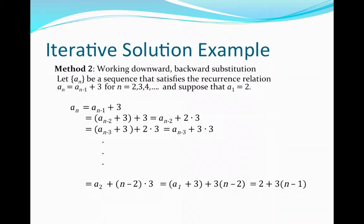Let's look at method number 2. Instead of working forward or upward, we're going to work downward using backward substitution. We're going to use the same recurrence relation and develop the same formula, but in a different way. Let a_n be a sequence that satisfies the following recurrence relation: a_n is equal to a_{n-1} plus 3 for n equal to 2, 3, 4. Take the previous term and add 3 to it, and we're going to begin with the same initial condition a_1 equal to 2. So instead of starting at a_1 and going forward, we're going to start at a_n and work our way backward.